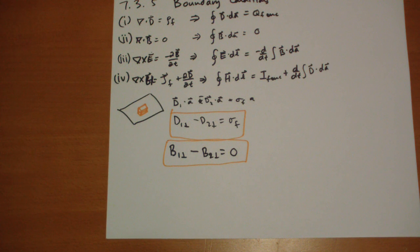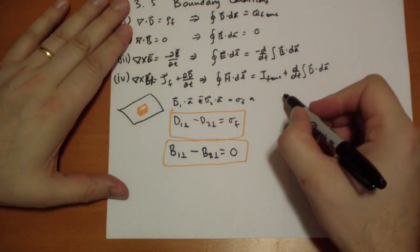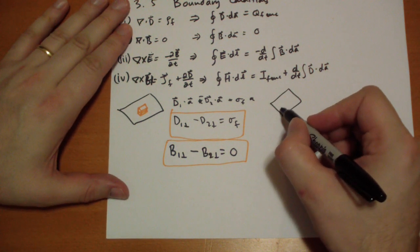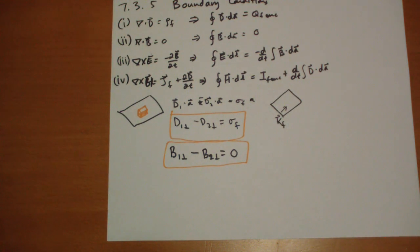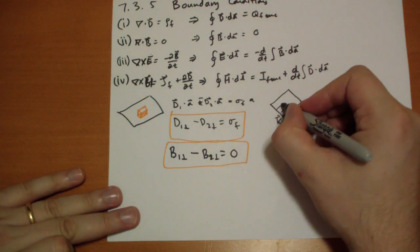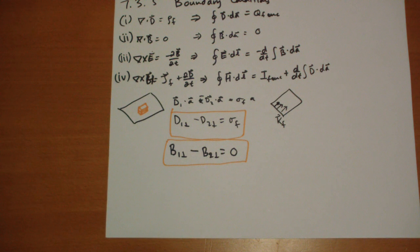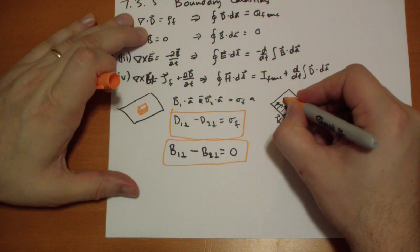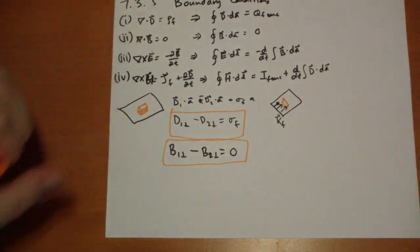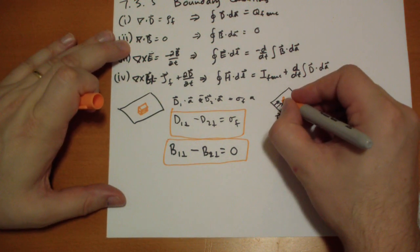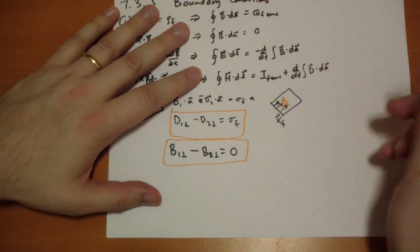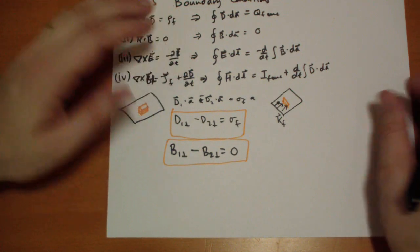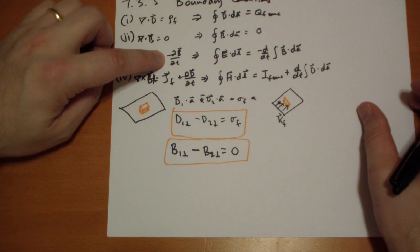For thin Amperian loops now, we have a surface with some free surface current passing across it. We're going to take an Amperian loop and increase it closer and closer until the loop is of zero height, taking the limit as it approaches the surface. The electric field is going to curl around based on how the magnetic field changes.